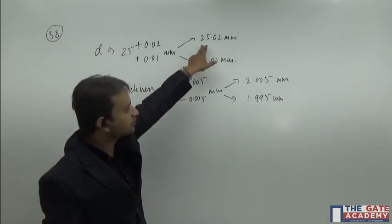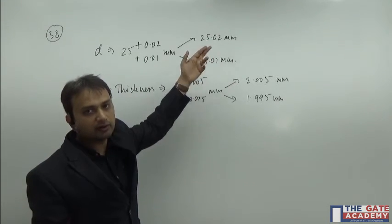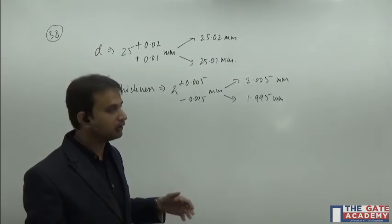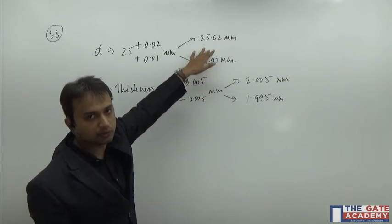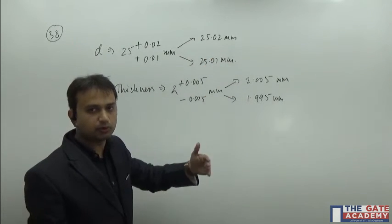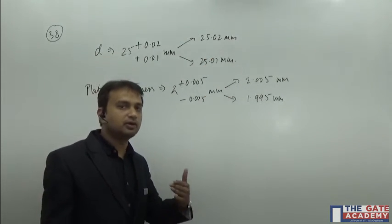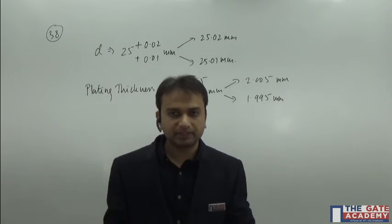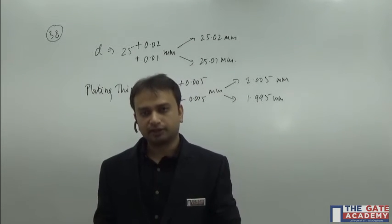Right now, it is 25.02. So the shaft cannot be greater than 25.02, although it could be smaller than 25.02, or it could lie within this region, 25.02 to 25.01. But it cannot be greater than 25.02. This is what we have understood so far.